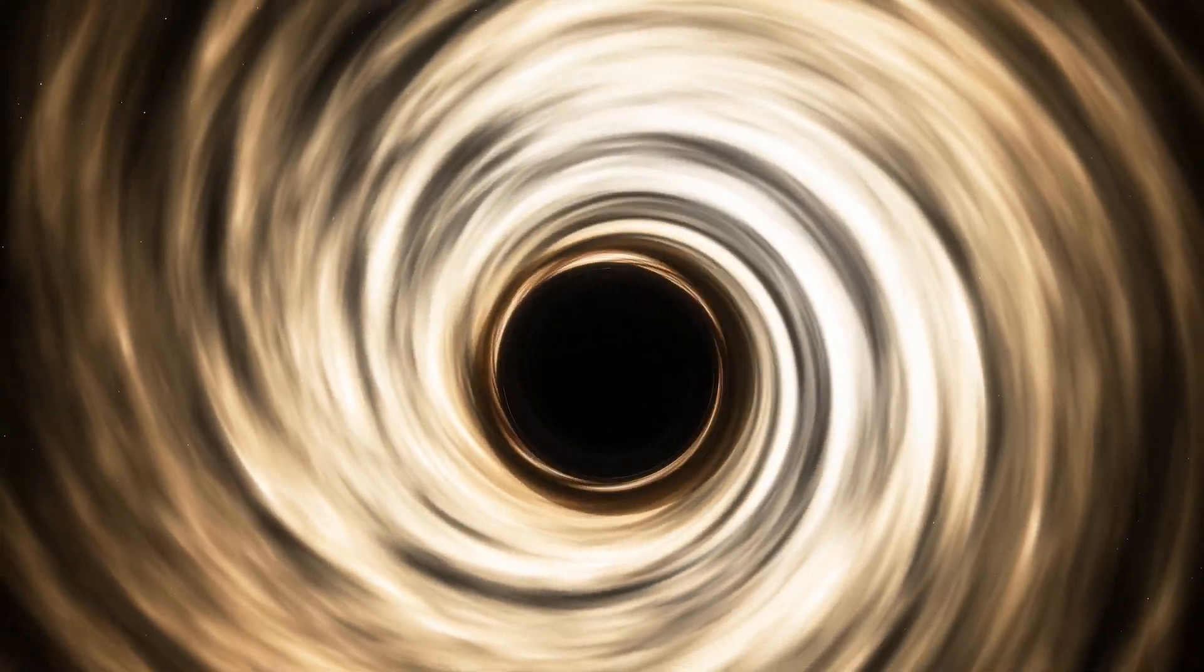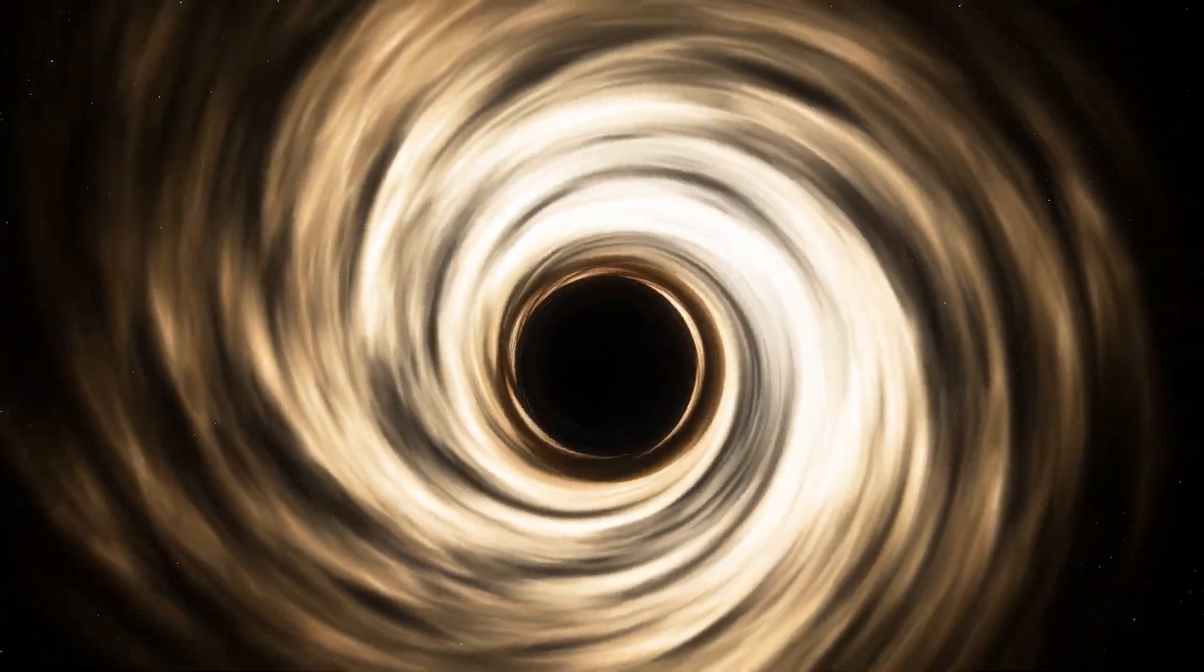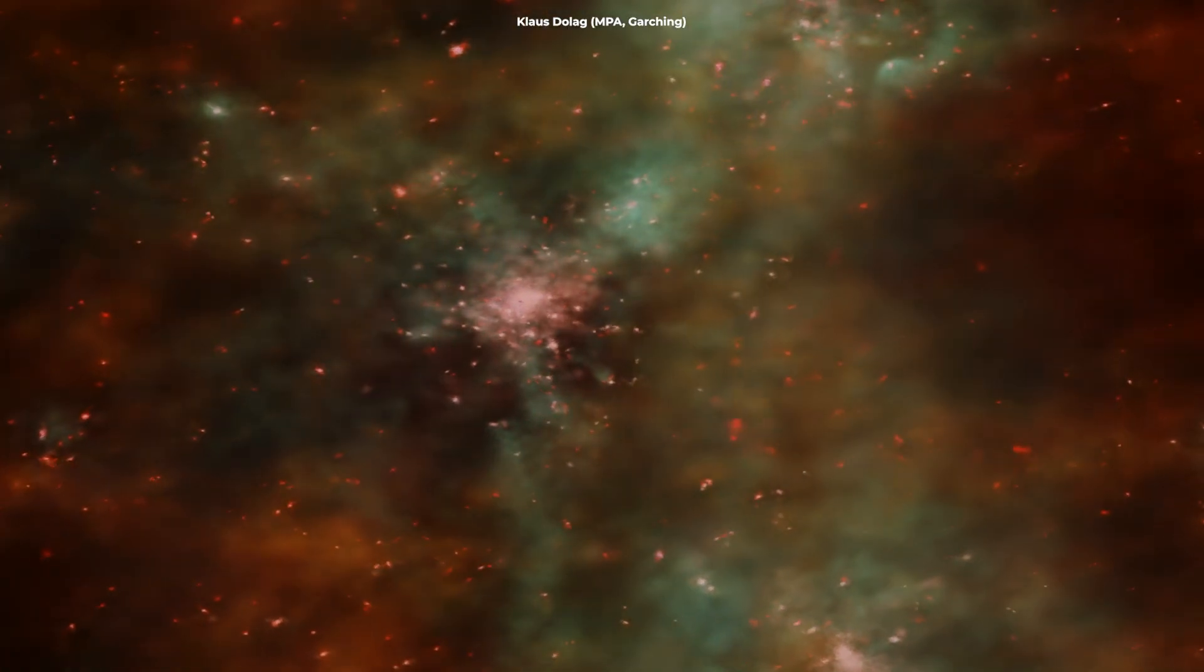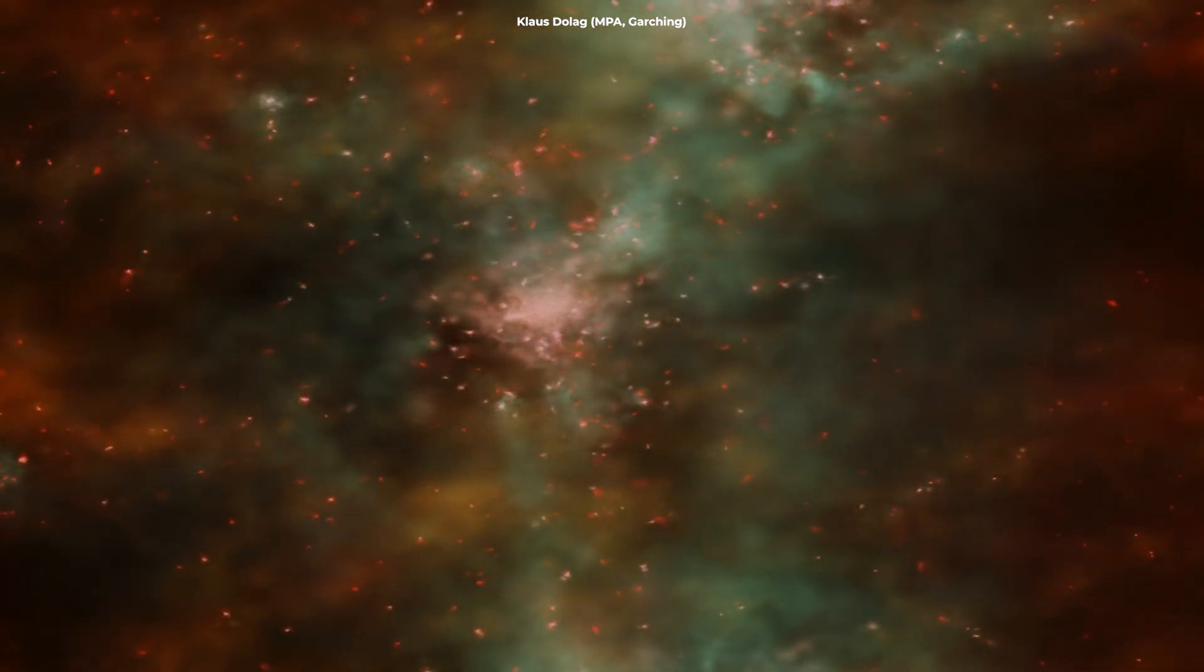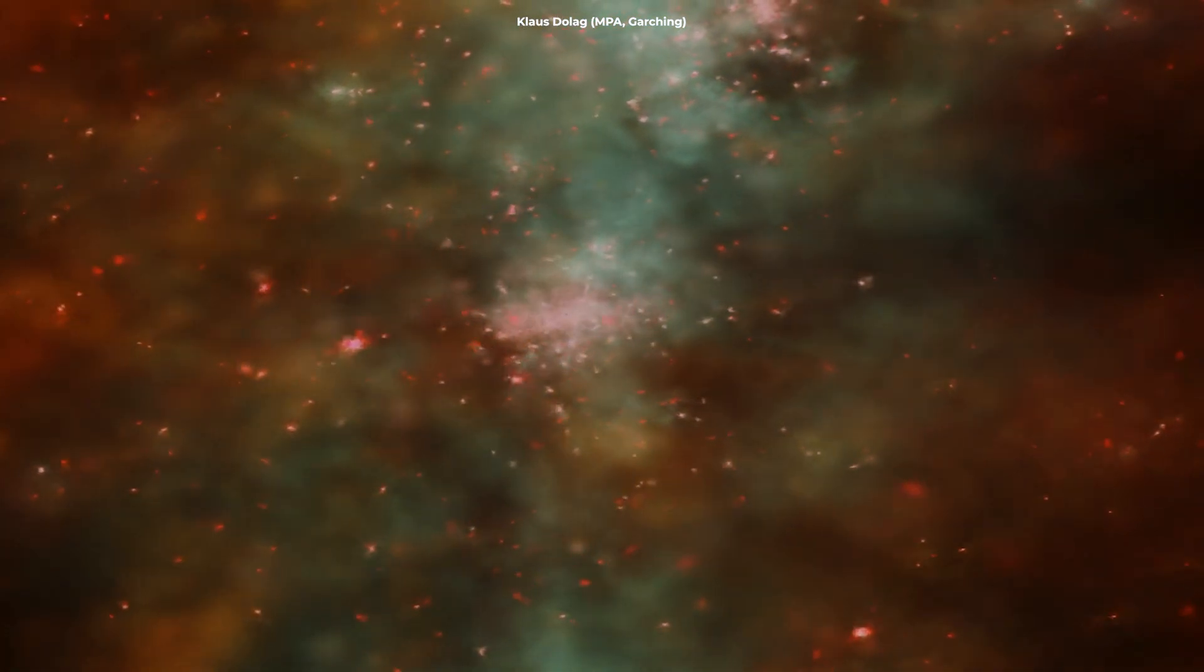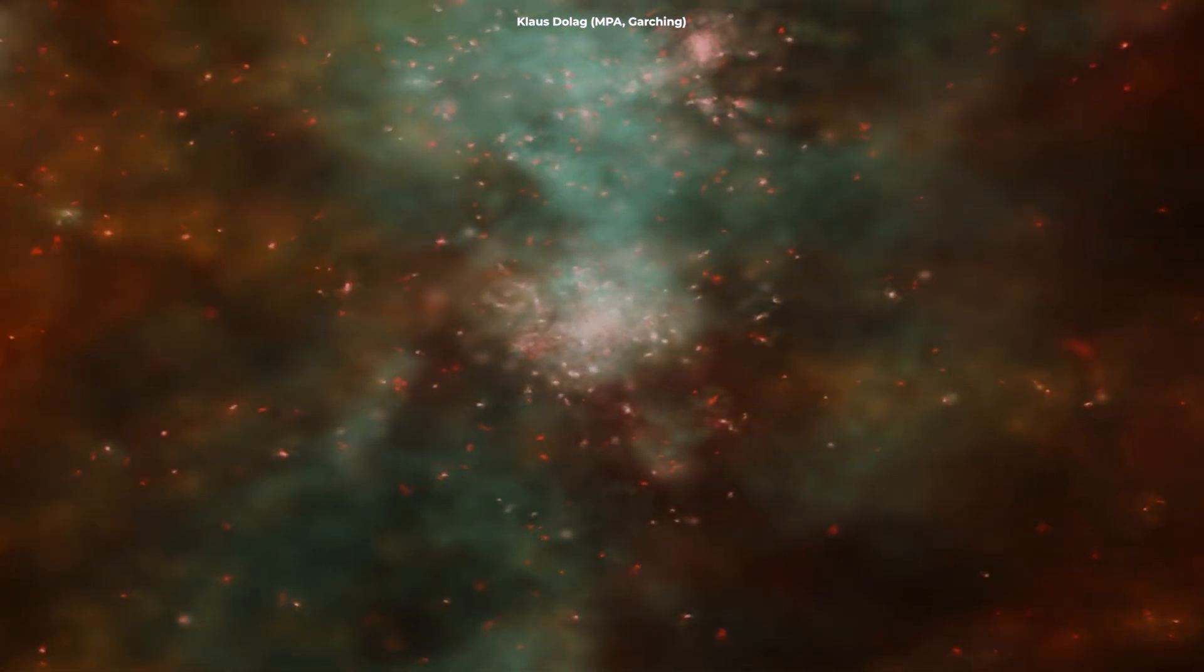Accretion is a highly efficient way for black holes to gain mass. In the dense environment of the Phoenix Cluster, there's plenty of material for Phoenix A-Star to feed on. The cluster is rich in gas and dust, which provides a continuous supply of matter for the black hole to consume.